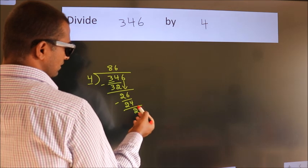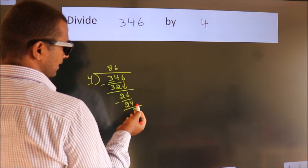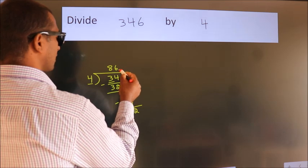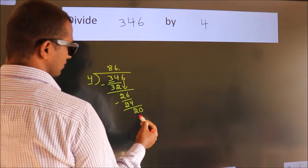After this, no more numbers to bring it down. So what we do is, we put dot take 0. So 20.